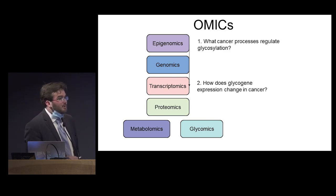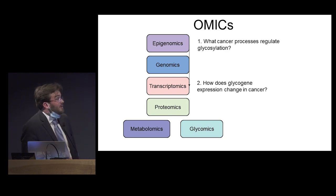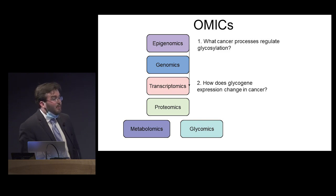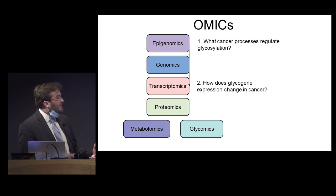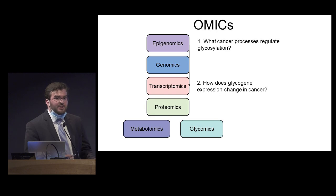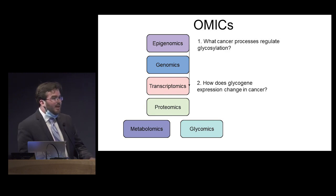Two main research questions I'd like to talk about today are: how are cancer processes regulating glycosylation — that's mostly an interaction between the epigenomics and the transcriptomics field — and how do these glycogene expression changes relate to what types of glycans we can expect by analyzing this level of data.